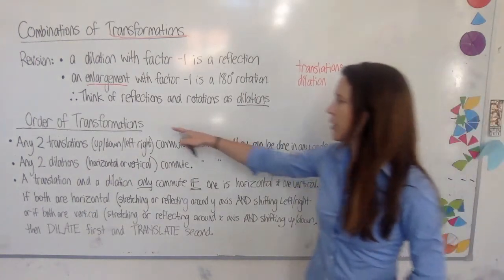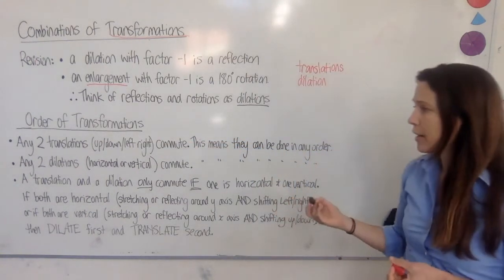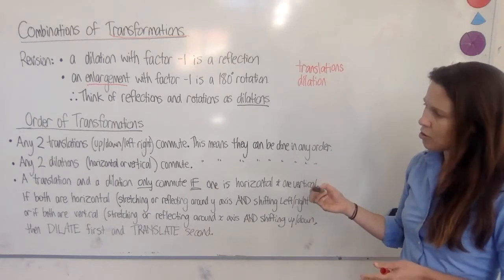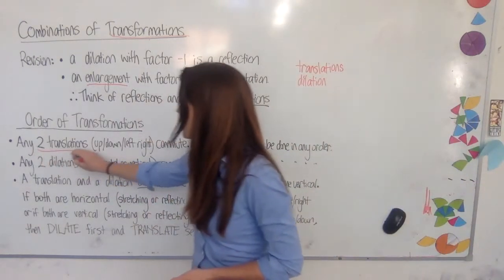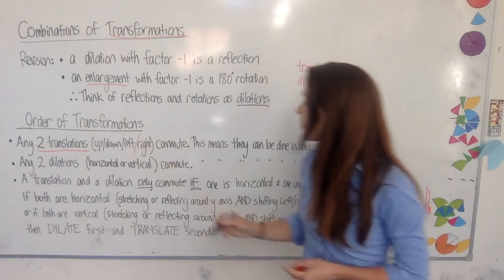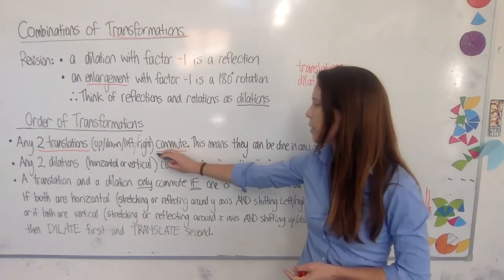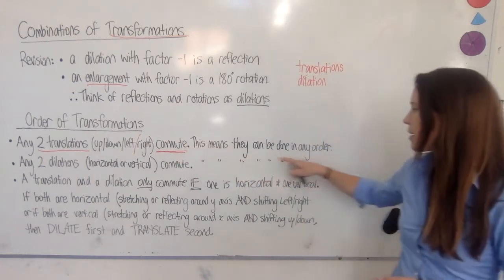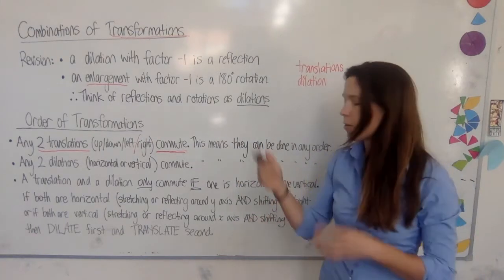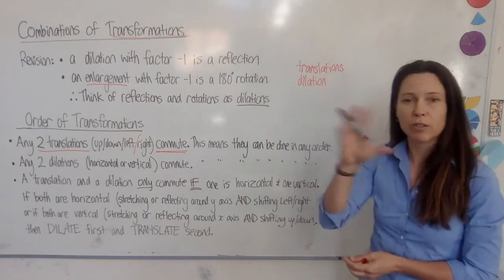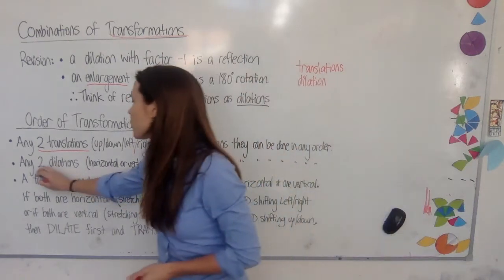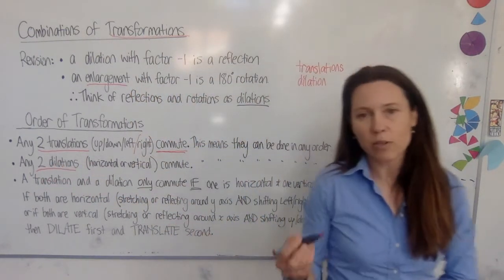The order of transformations matters because there are rules that, if you break them, will mess up your graphing when performing more than one transformation. The rules are fairly logical. Any two translations — an up or down as well as a left or right — commute, meaning they can be done in any order. Similarly, if you're doing two dilations, one horizontal and one vertical, they also commute, so you can do those in any order as well.